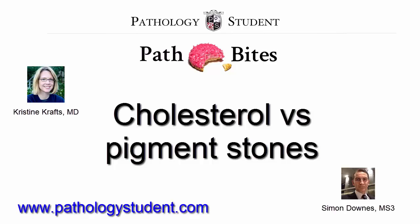Pigment stones are divided into black and brown. Black stones are found in sterile gallbladder bile, while brown stones are found in infected intrahepatic or extrahepatic ducts. Black stones are often radiopaque because they contain calcium carbonates and phosphates. Brown stones are radiolucent because they contain mostly calcium soaps.